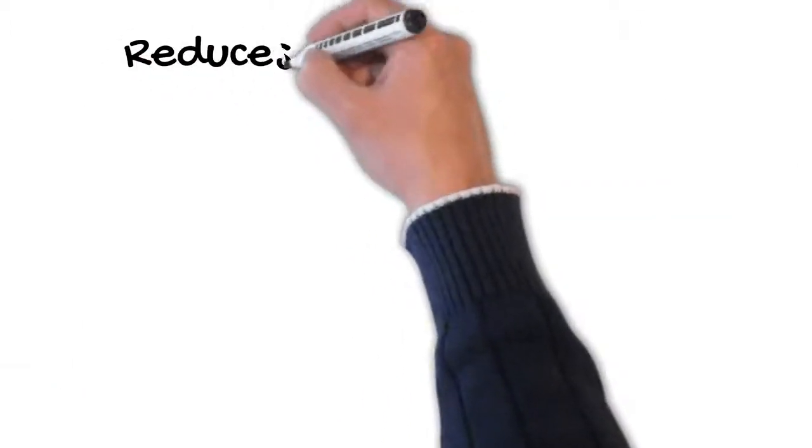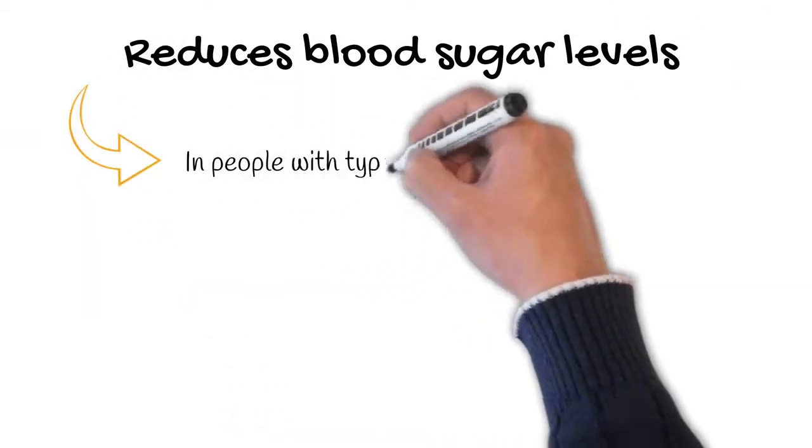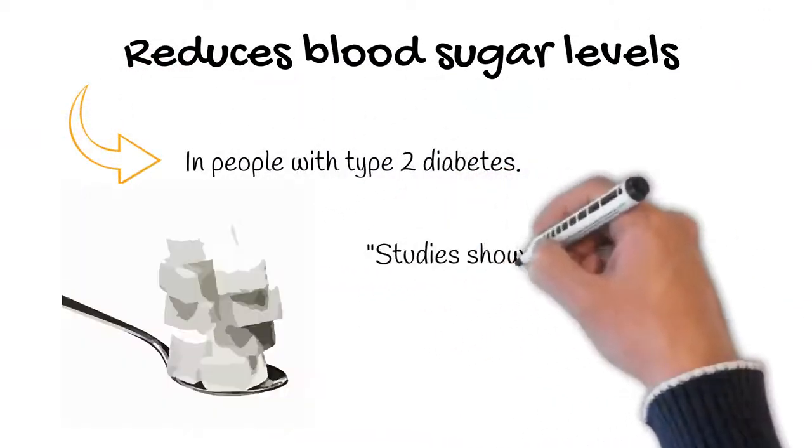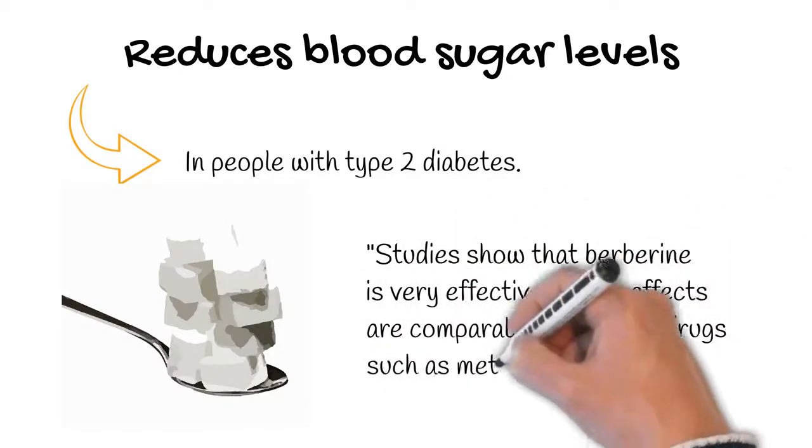For example, berberine can reduce blood sugar in people with type 2 diabetes. Many studies show that berberine is very effective and its effects are comparable to popular drugs such as metformin.